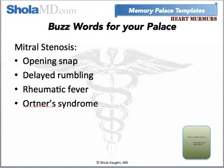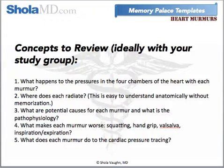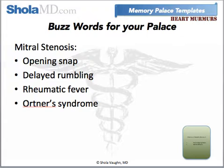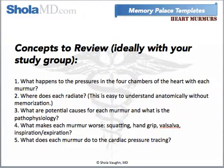Ortner syndrome is kind of a zebra, but it's a cool extra thing to know if you ever get pimped on it during wards. Remember that as you go through these, the key is to make really vivid images for each of the buzzwords and to put them in the location where you're keeping that group of facts. If you have four images that go along with four buzzwords, they would all be together in that area. To memorize, you kind of walk through your palace in your mind, visualizing all the images associated with any given disorder or bacteria or fact. Remember, having a vivid, well-organized memory palace only helps if you can back it up with conceptual knowledge.